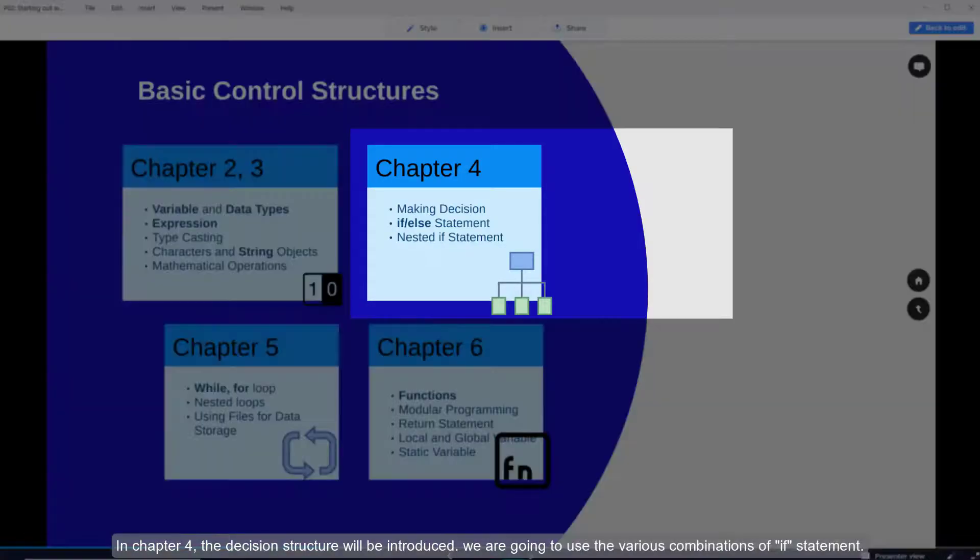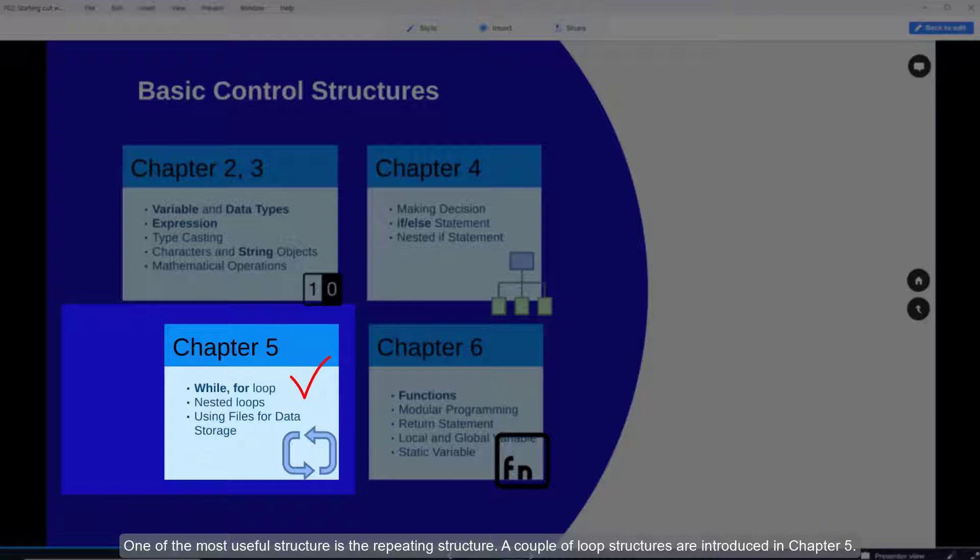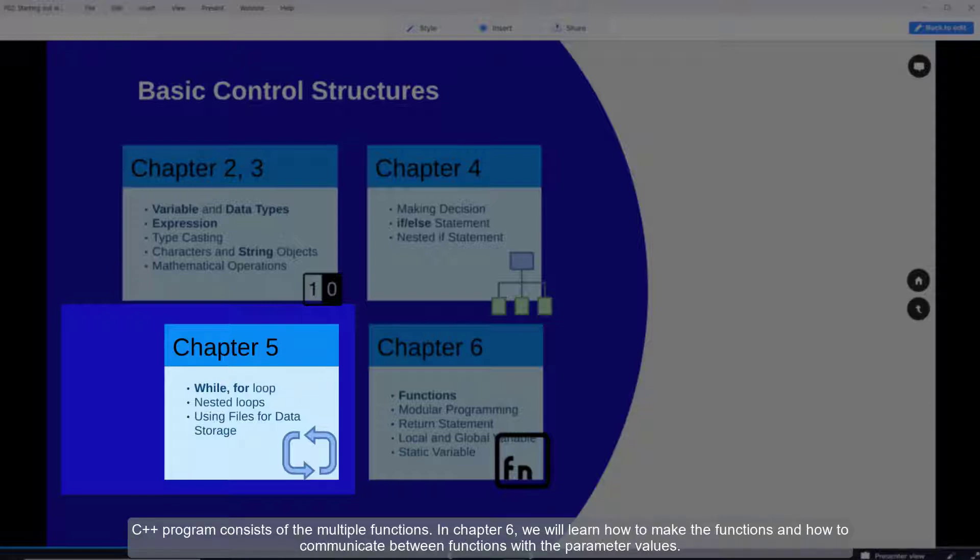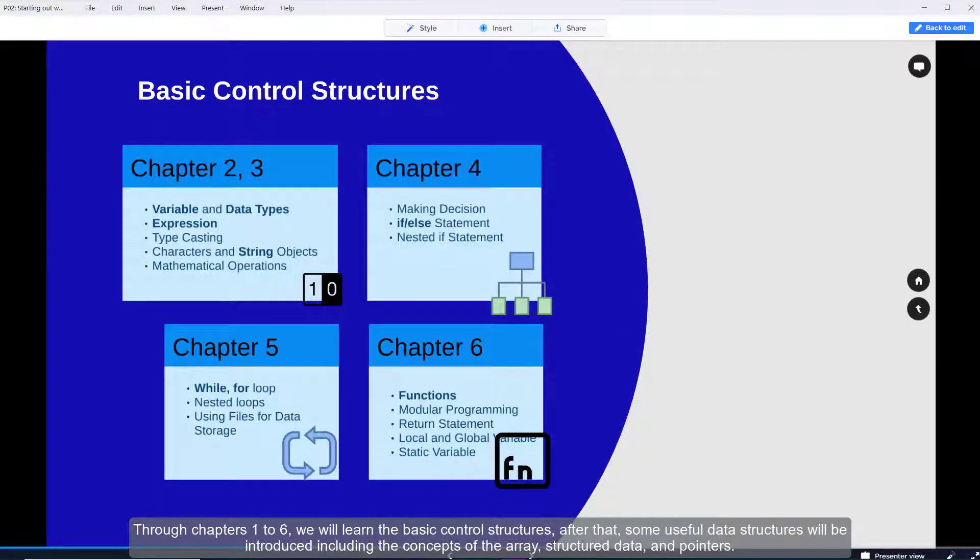In chapter 4 the decision structure will be introduced. We are going to use the various combinations of if statements. One of the most useful structures is the repeating structure. A couple of loop structures are introduced in chapter 5. C++ programs consist of multiple functions. In chapter 6 we will learn how to make functions and how to communicate between functions with parameter values. Through chapters 1 to 6 we will learn basic control structures.